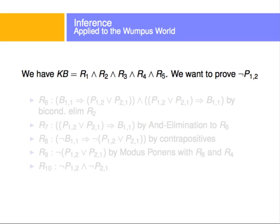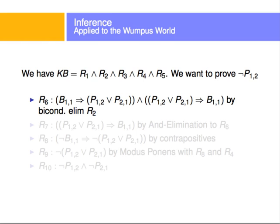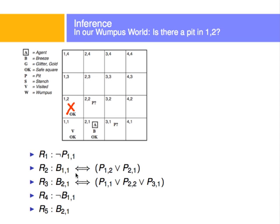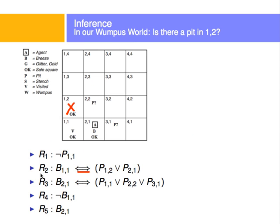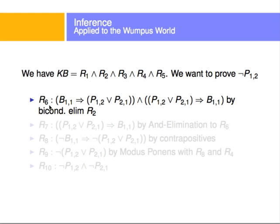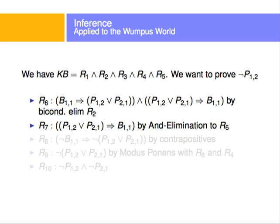One of the things I can do is start by adding a new rule. I am using my elimination rules and inference rules and equivalences to derive more rules based on what I already have. If I use biconditional elimination on rule 2 — to get rid of the if and only if — I will end up with a sixth rule, which is the biconditional elimination as two implications. In the same way, I can add a seventh rule by AND elimination to rule 6.